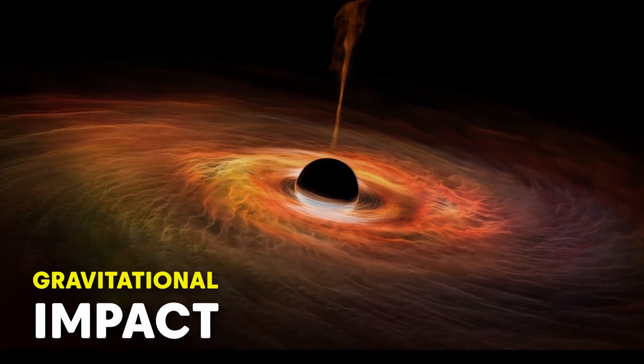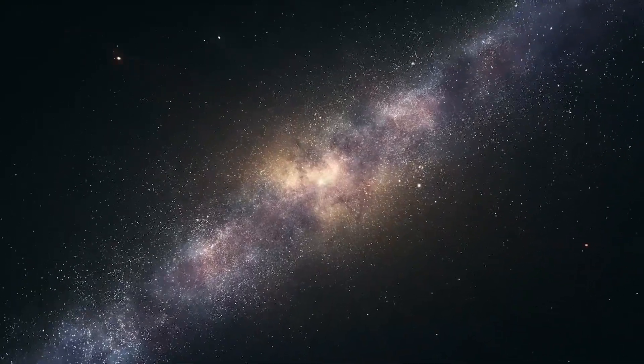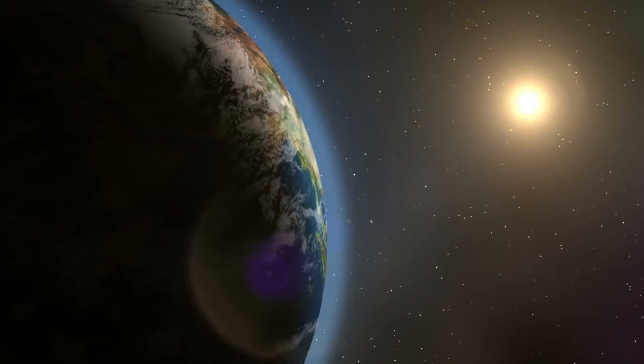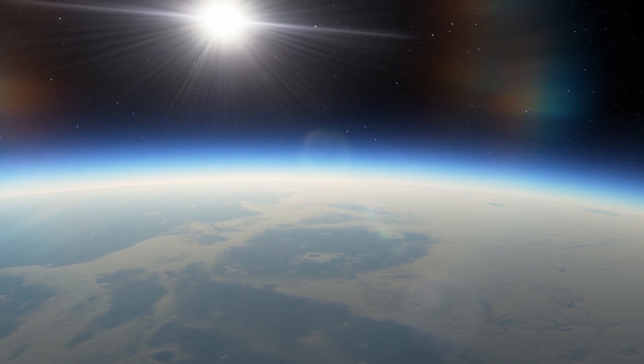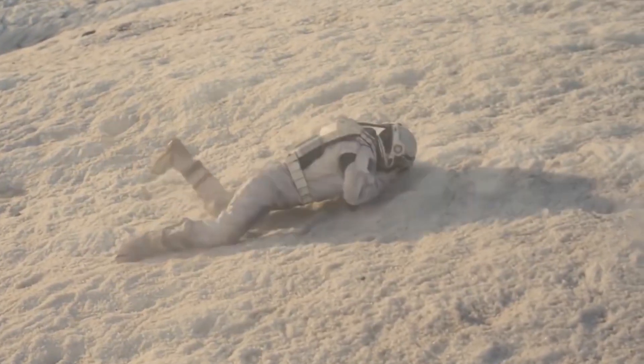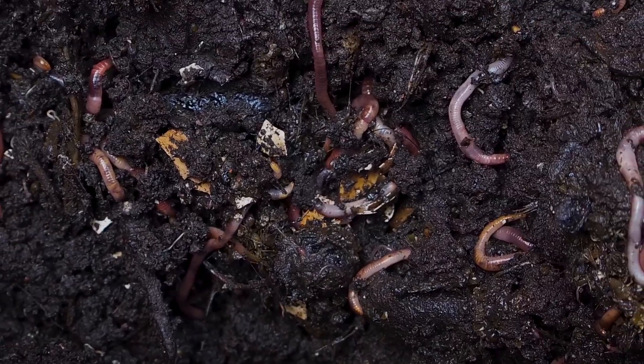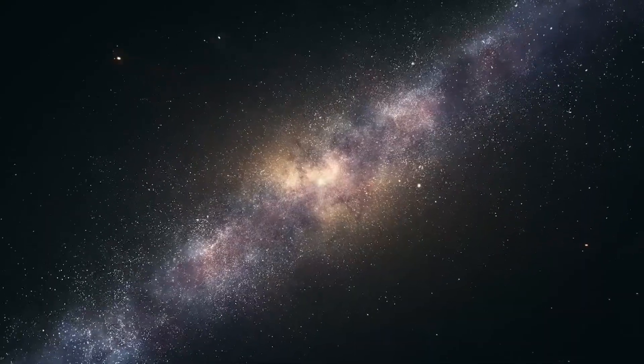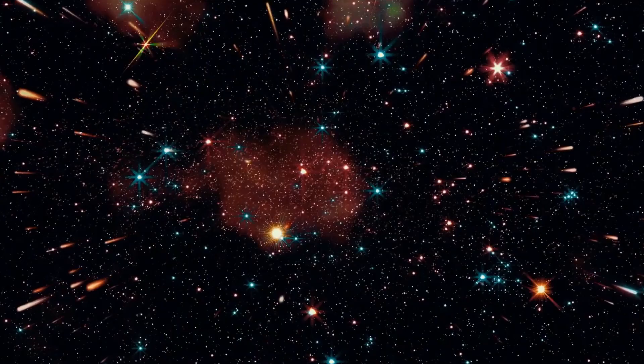Gravitational Impact: One of the most significant consequences of Earth becoming as big as the Sun would be its gravitational impact. The gravitational pull on the surface would increase dramatically, making it impossible for humans or any known lifeforms to survive. Our current escape velocity of about 11.2 km per second would be inadequate to leave the planet's surface, making space exploration a distant dream.